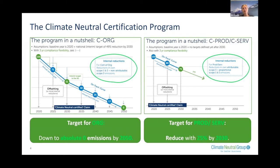We have developed a climate neutral certification program. What we find very important is that we make it mandatory that you have to reduce yourself — only offsetting is not enough. If you want to become certified for an organization, you need to go down to absolute zero by 2050. If you're getting certified for your product or service, you need to reduce your emissions by 25% by 2030. These reductions mainly concern scope 3 emissions in your value chain.